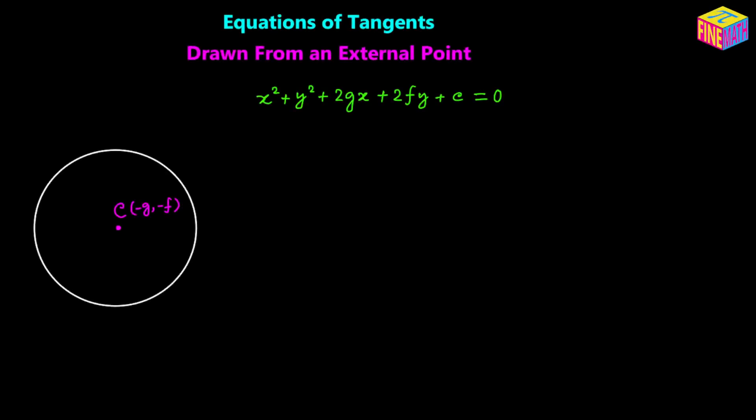Hi everyone. In this video we are going to see how to find the equation of the tangents drawn from an external point to a given circle, where the coordinates of the external point and the equation of the circle would be provided.